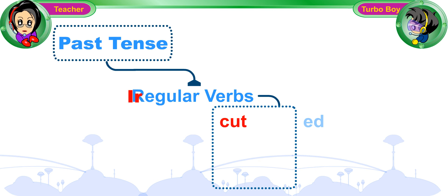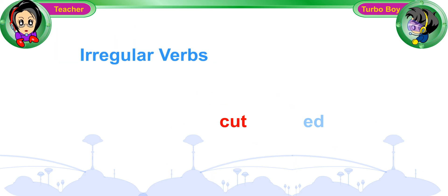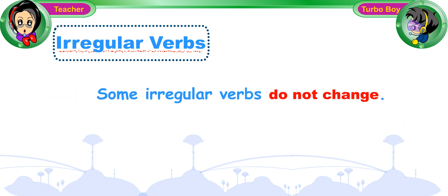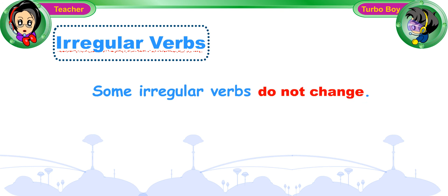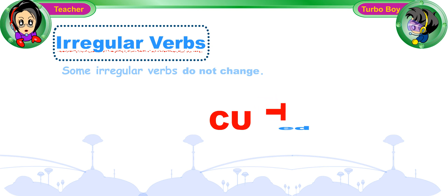Cut is an irregular verb. What is an irregular verb? You do not add ed to the past tense of irregular verbs. Some irregular verbs do not change. For example, the past tense of cut is still cut — C, U, T. There is no ed behind it.